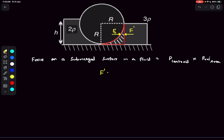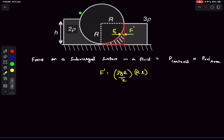We can easily write F' using the centroid result. This surface is rectangular; its center is at a depth of r/2 since the height of the column is r. So the pressure at the centroid is ρg(r/2), and multiplying by the area r×l gives F'. We use gauge pressure because atmospheric pressure acts on every point of the cylinder and cancels out — we only care about the excess pressure above atmospheric throughout the cylinder.